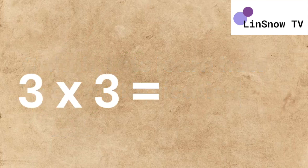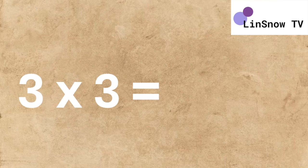3 multiplied by 3. What you have to do is you simply count 3, 3 times. And then you add them all together to get your answer.